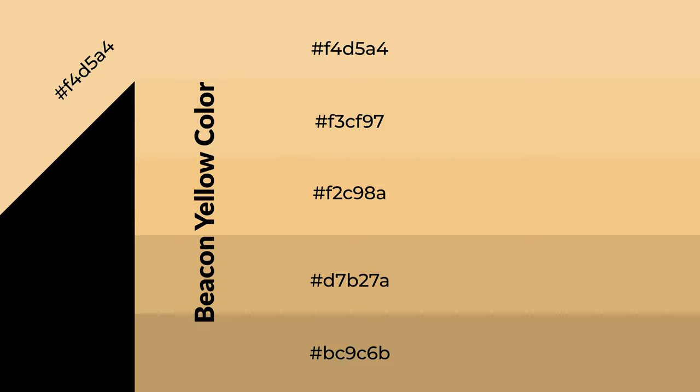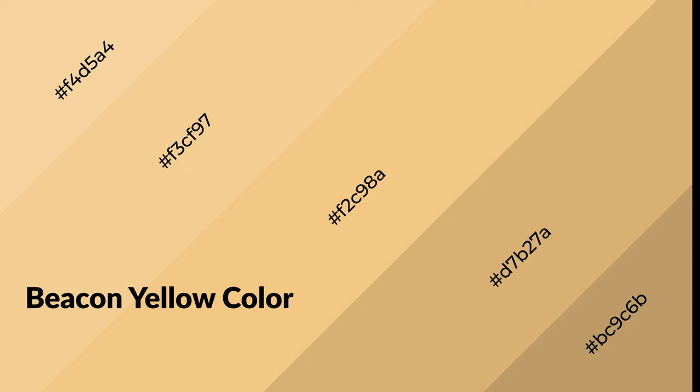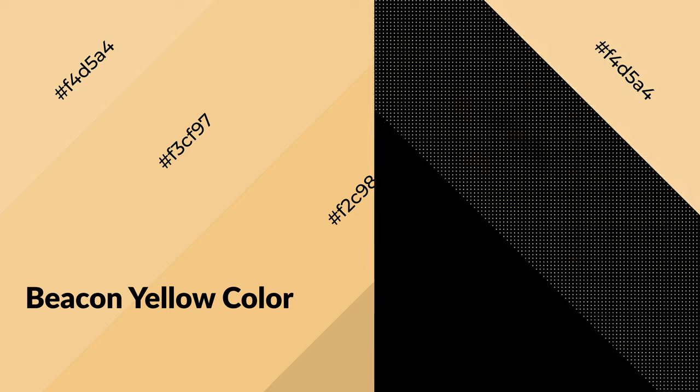To generate shades of a color, we add black to the color. Shades are used in patterns, 3D effects, and layers, and they create depth and drama. Beacon yellow is a warm color that emits cozier and active emotions.